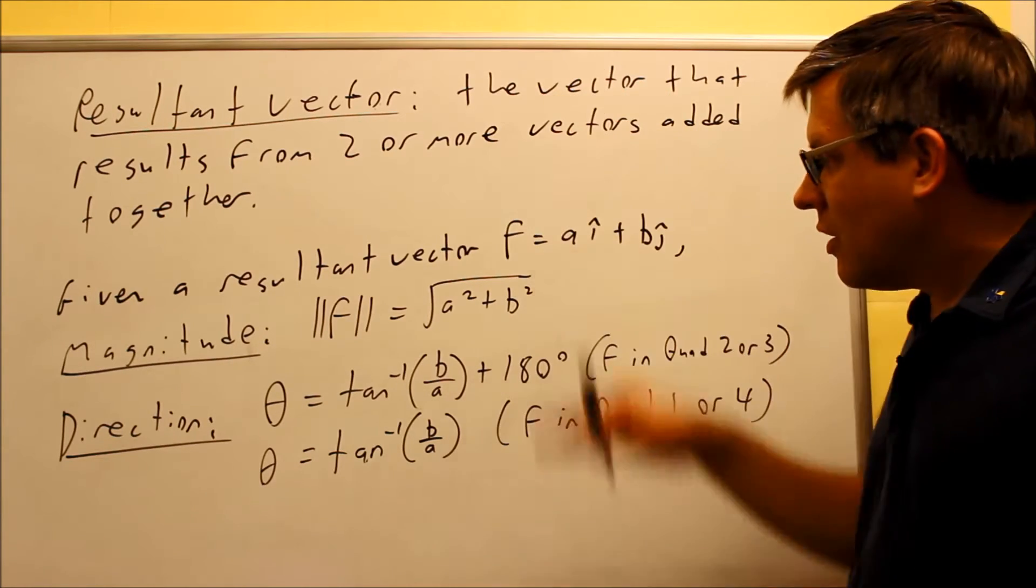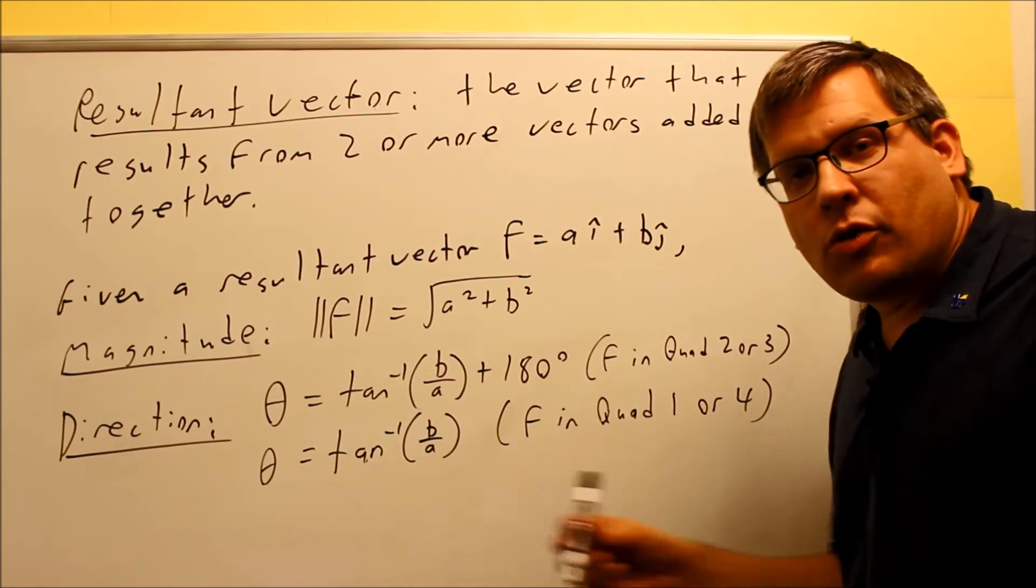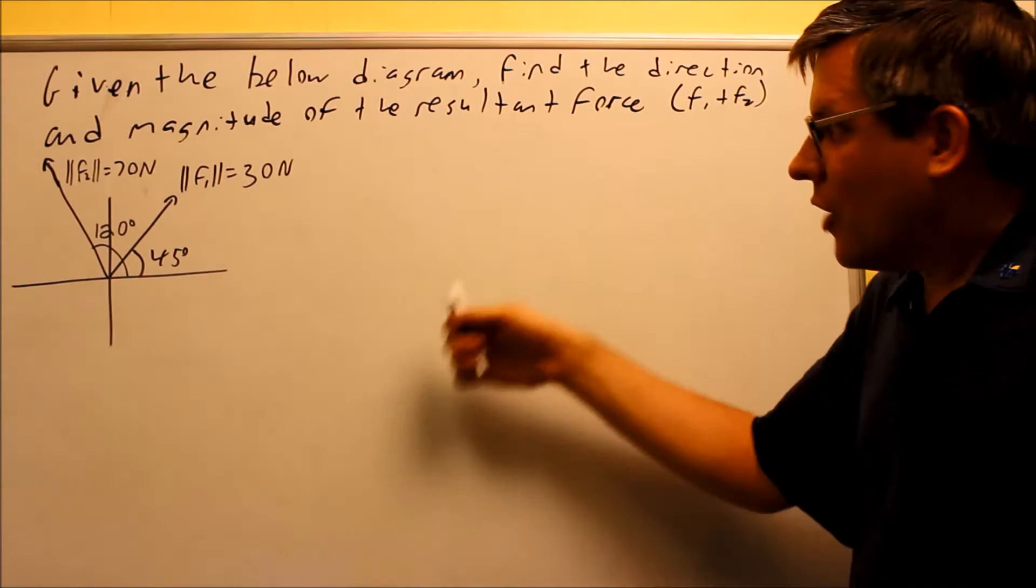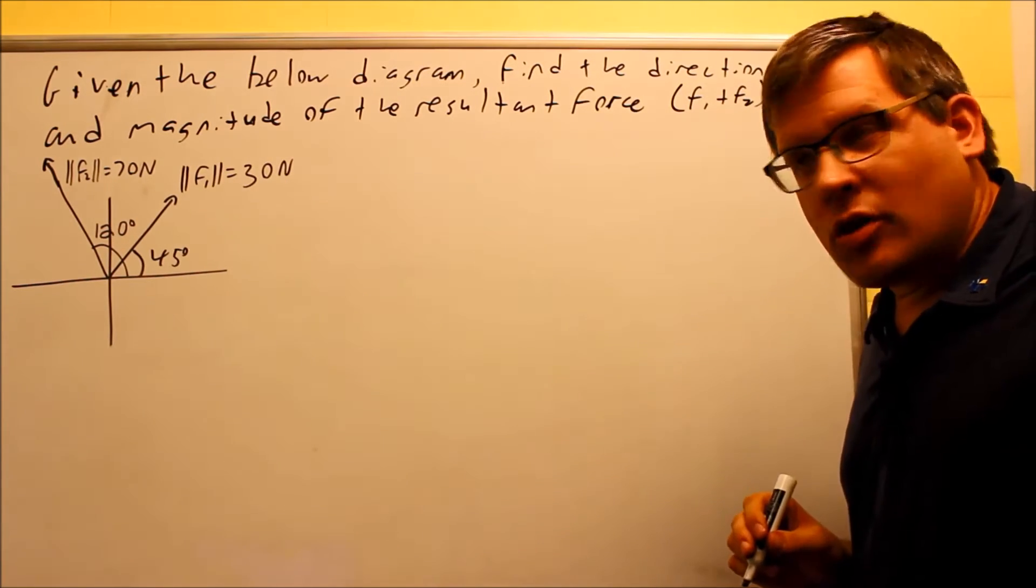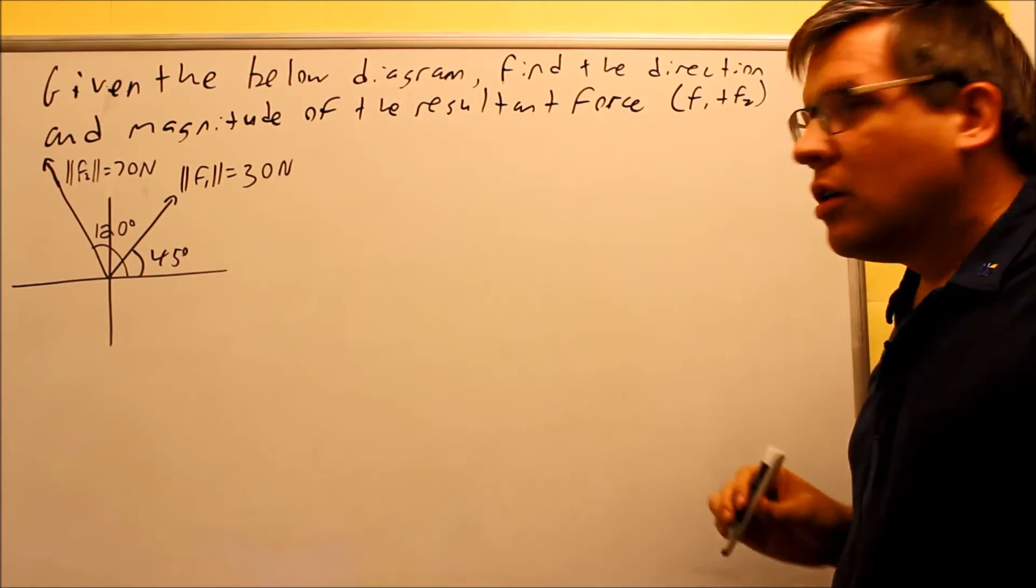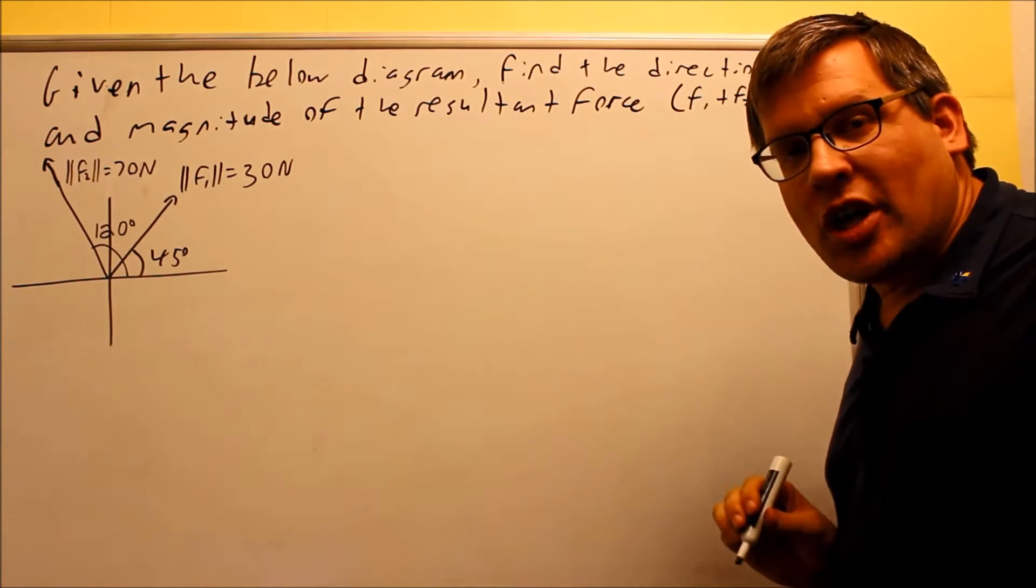So now that we've taken a look at these definitions and properties, let's go ahead now and apply it with an example. Okay, now we're ready for the example. We have two vectors that we want to add together and get the resultant. It's asking us, using the diagram, to find the direction and the magnitude of the resultant force. In other words, they want us to find F1 plus F2.